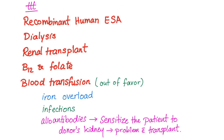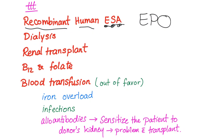For treatment, there is a new thing called recombinant human ESA — erythropoietic stimulating agents. This is EPO made artificially. We give it to people who are deficient in EPO. Some athletes also abuse EPO to get more RBCs, to carry more oxygen, and to perform more exercise.